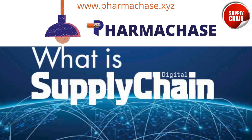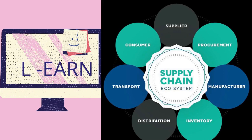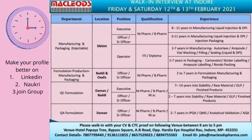Hello friends, today we learn about the supply chain. What is the supply chain? Supply chain is a network where we handle suppliers, procurement, manufacturing, inventory, distributions, transportations, and consumers — all related to your company's benefits.